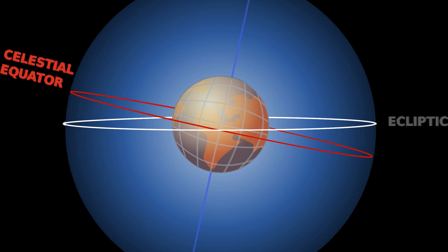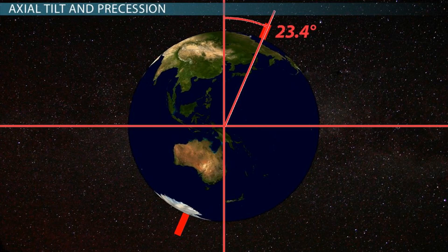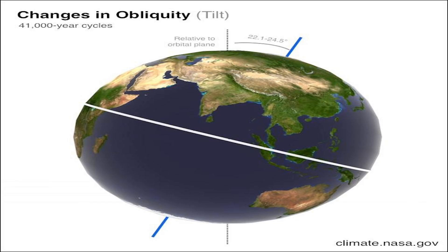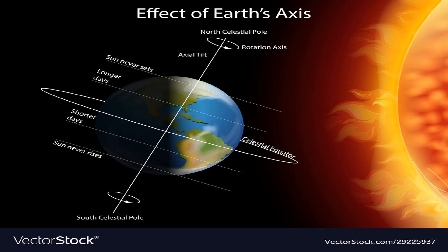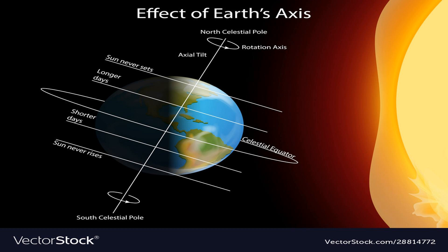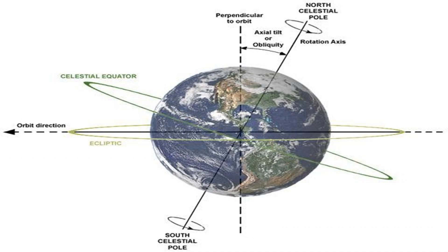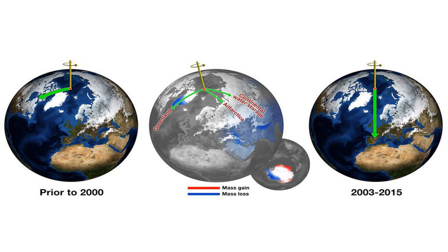The Earth's axis is tilted at an angle of approximately 23.5 degrees relative to its orbit around the sun. This tilt is what leads to the variation in seasons that we experience throughout the year. When the northern hemisphere is tilted towards the sun, it receives more direct sunlight and experiences summer, while the southern hemisphere is tilted away and experiences winter. The angle of axial tilt affects the intensity and duration of sunlight reaching different parts of the Earth, resulting in the beautiful cycles of seasonal changes.